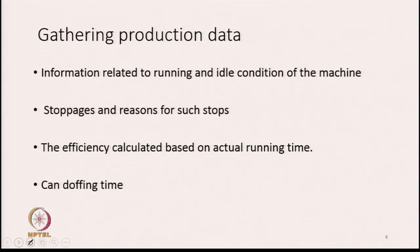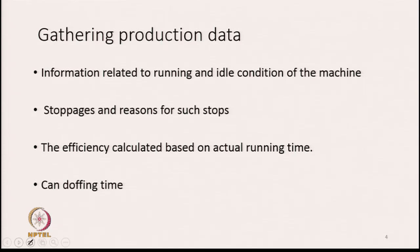The system can also collect production data. Information related to running and idle conditions of the machine will be available — how long the machine was idle and how long it actually worked. Second is stoppages, and the reason for such stops: how many times the machine stopped and what are the reasons for those stops.